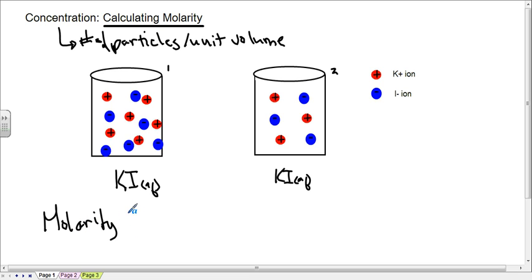And we denote molarity with a large M, and our molarity is the number of moles of whatever we're looking at per unit volume. And this unit volume needs to be in liters, that's going to be important later on, and so our units are moles per liter.